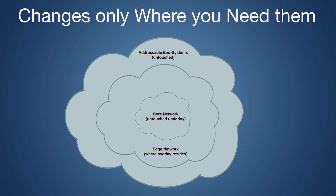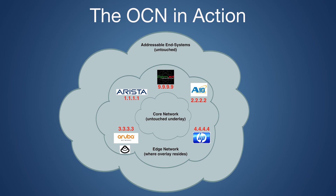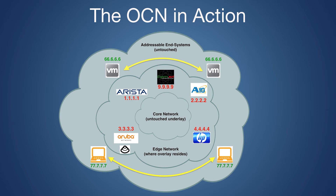We brought together Arista, A10, Aruba, HP, and LISPERS.net. We used Arista and A10 in two different data centers. Arista was a top-of-rack switch running LISP. A10 was a load balancer running LISP. We wanted to move a VM from one data center to the other, while a laptop connected wirelessly to Aruba would move to a wired connection to HP. We found that both of these end systems could move at the same time, keep their connections up, and not have to change their IP addresses. This reduces OPEX quite a bit for IP address management, and this mobility can happen while the core stays static and scales.